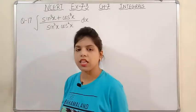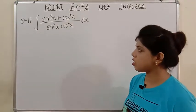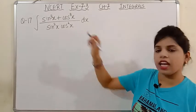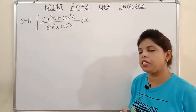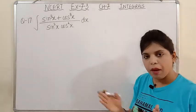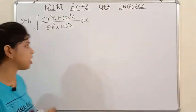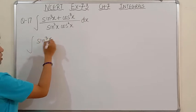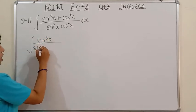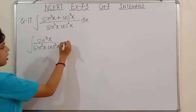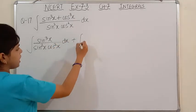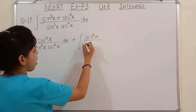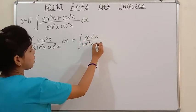Here the denominator is sin²x × cos²x in multiplication. So what we will do is take sin²x · cos²x under both terms separately. The key technique here is that whatever step or procedure you apply at the starting should simplify the quotient. So by doing this, the function will simplify nicely.